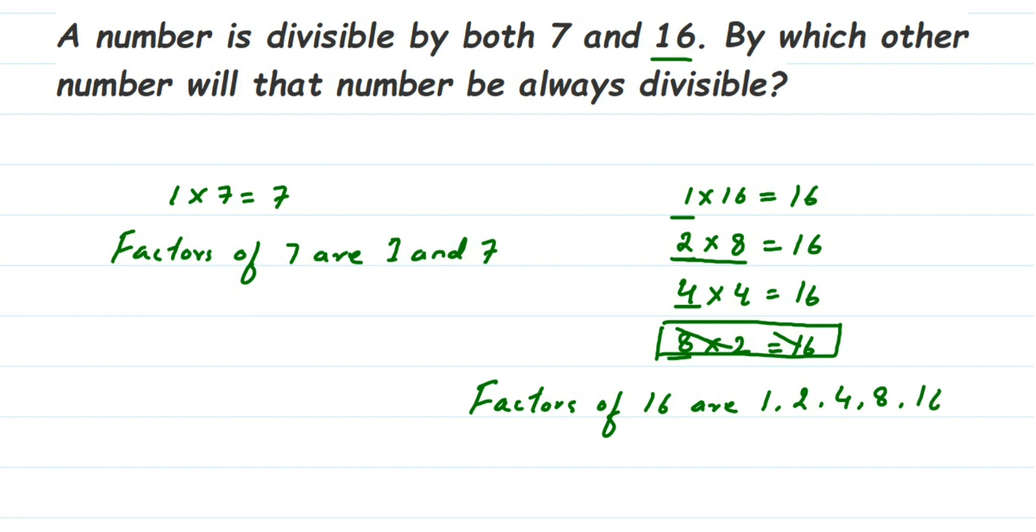They're asking to find the number which divides both 7 and 16, so we have to find the common factor. You can see that only 1 is a factor which is present in both. It divides both numbers, so 1 is the only number which divides both 7 and 16.